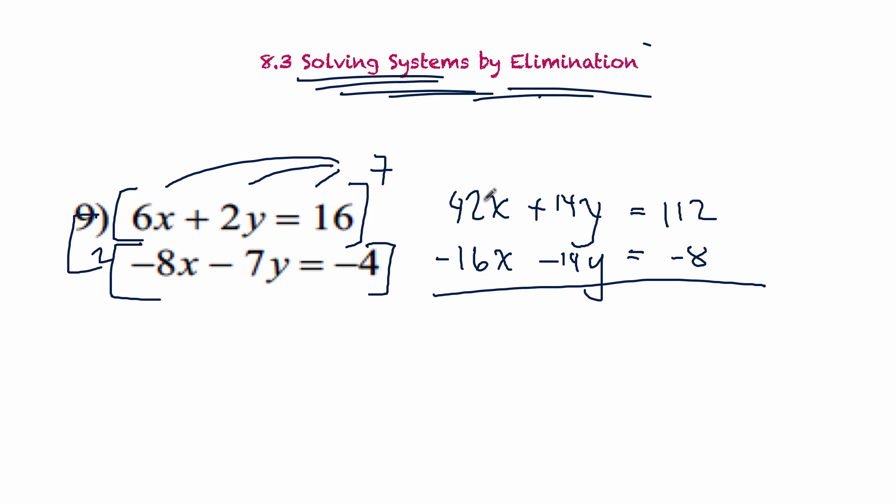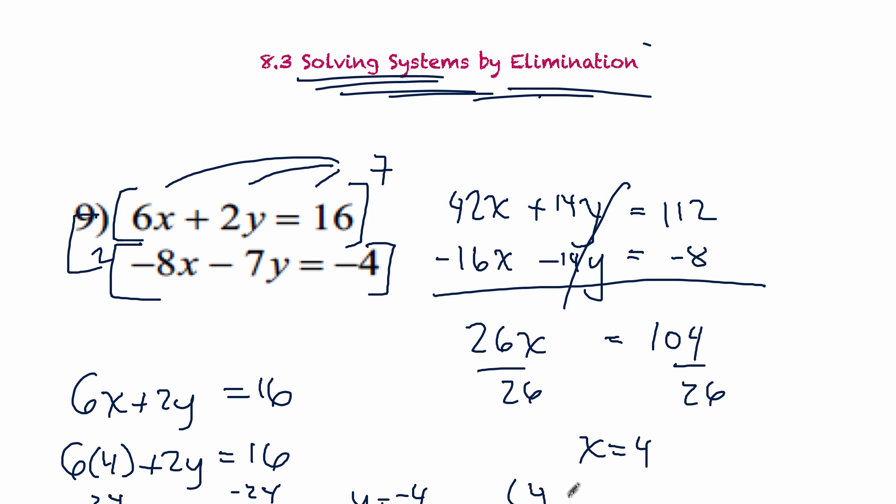So 42 minus 16. Well, 40 minus 16 would be 24. So this is going to work out to be 26x. These cancel out, and all of this equals 104. We divide by 26 on both sides. We're good at math, so we know that x equals 4. Now you have to go back and pick an equation. I'll pick the first one because there's no negatives. So 6x plus 2y equals 16. We've got to plug that answer in. So x equals 4. We get 24 plus 2y equals 16. We're going to subtract 24 from each side. We get 2y equals negative 8 or y equals negative 4. So we get the coordinate point 4, negative 4.